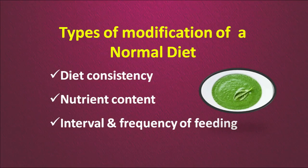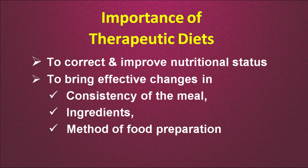How do we do it? There are types of modification of a normal diet. We can change the diet consistency, alter the nutrient content, and change the pattern of eating — the frequency of feeding and the intervals. Therapeutic diets are given to correct and improve nutritional status, bring effective changes in the consistency of the meal, ingredients used, and also the method of food preparation.